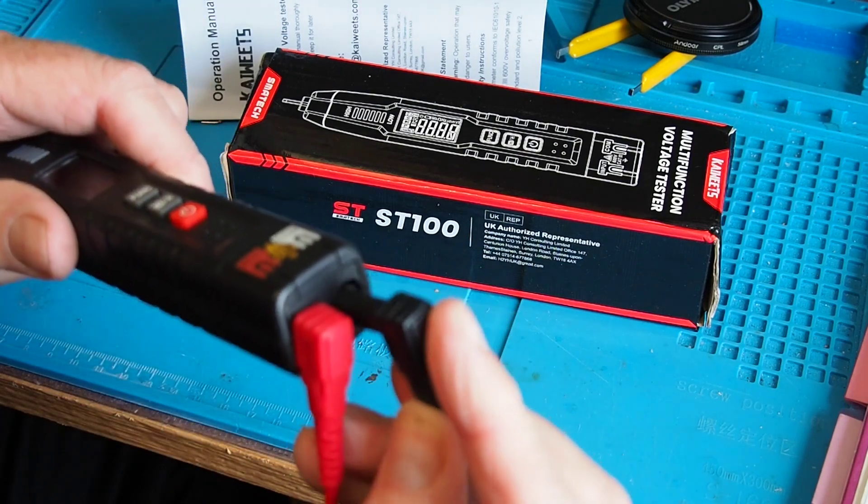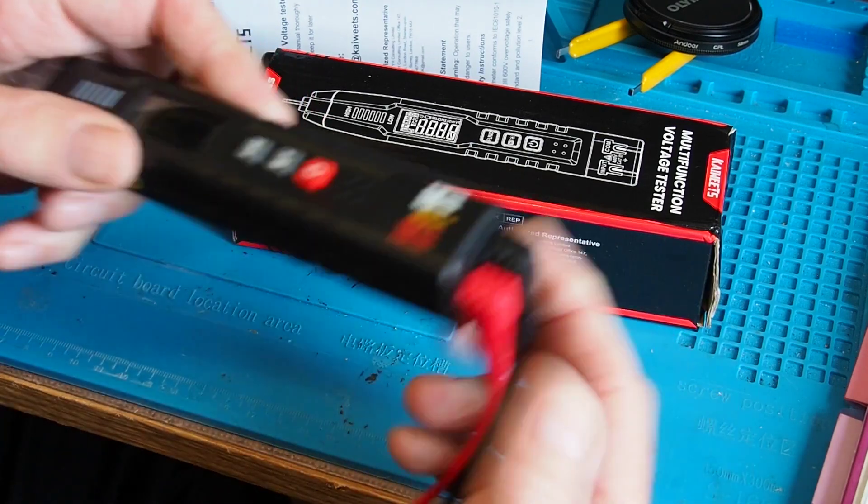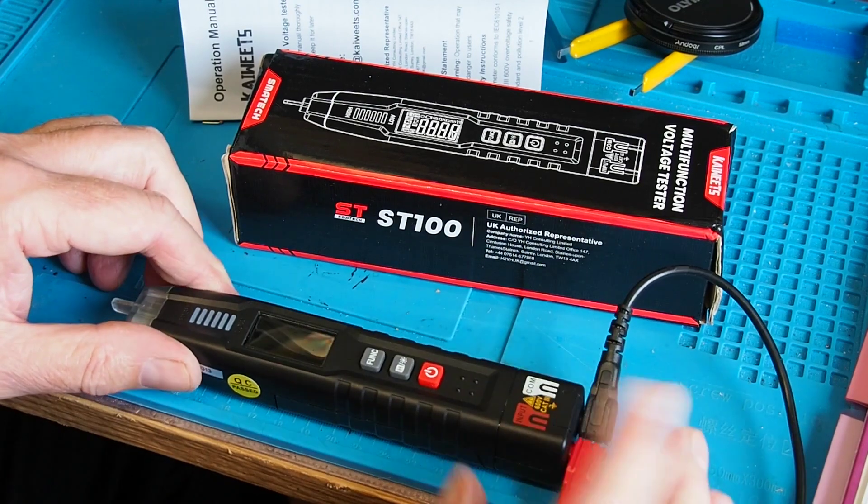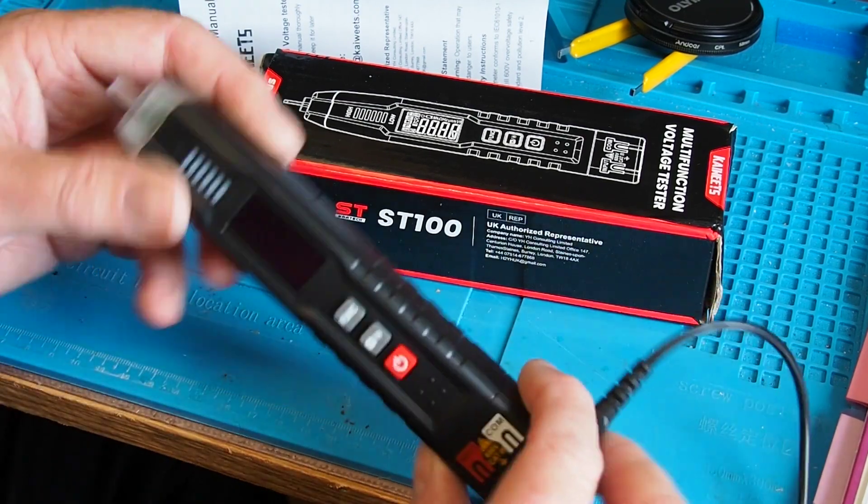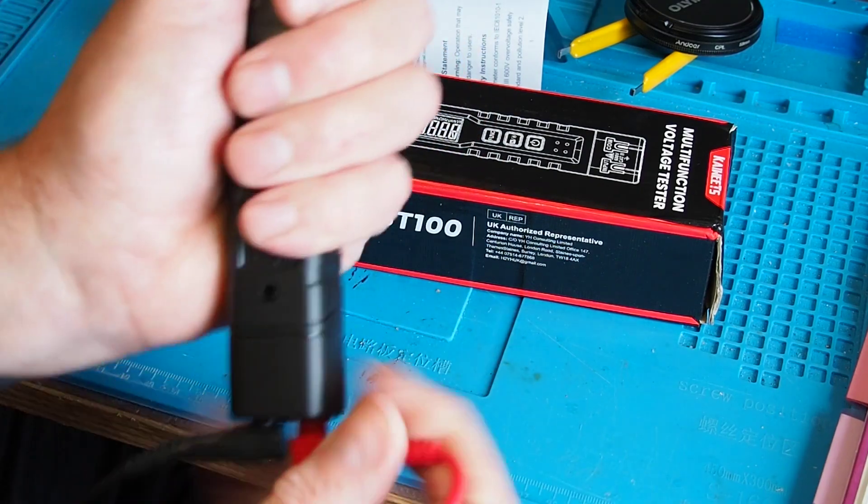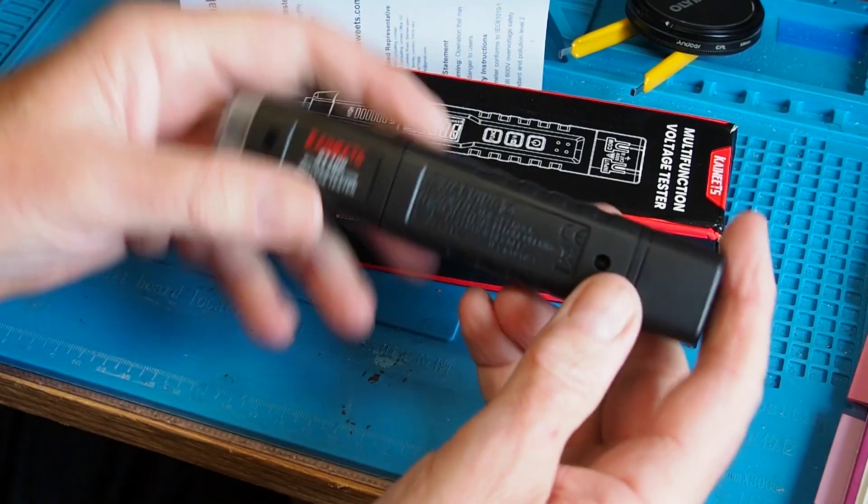Two leads fit in there and if you want to use it flat on a bench that works rather nicely like that. The other things to show you about the case, in the back here we've got a cover that's held in with a screw.